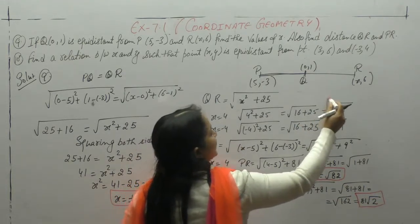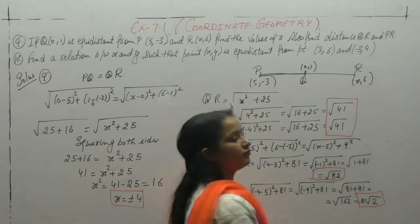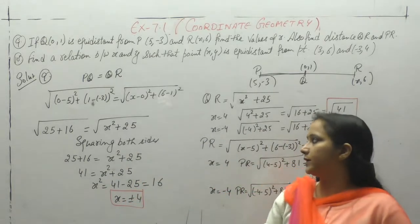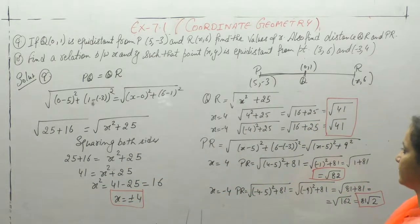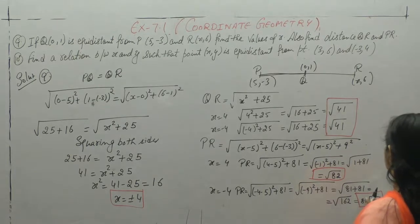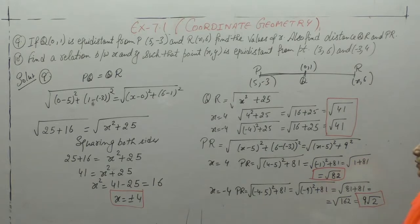And our QR value is square root of 41. Note it down. Taking square root of 81, we get 9, so 9 square root of 2.